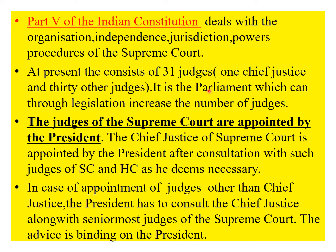At present there are 31 judges — one Chief Justice and 30 other judges. This number has been increasing over the years. The Parliament can amend and make changes to the number of judges by a simple majority, so it is the Parliament's power to determine the composition of the Supreme Court.